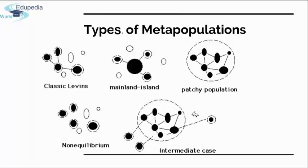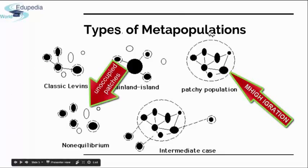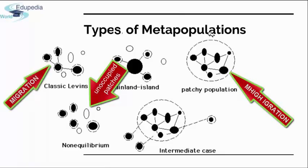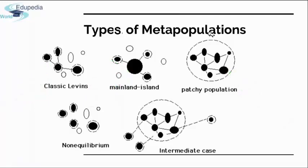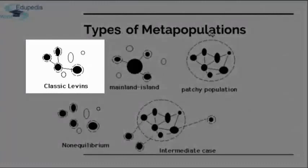The first is the classical Levins model, named after the founder who introduced the metapopulation concept. This model states that a metapopulation is distributed over many patches of suitable habitat with significantly less interaction between patches than within a patch — favoring interactions within the same subpopulation over those among different ones.